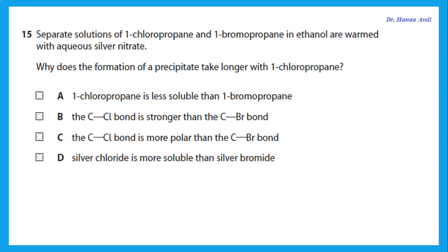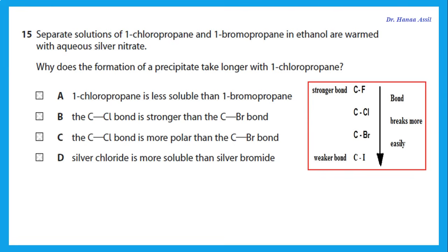Separate solutions of 1-chloropropane and 1-bromopropane in ethanol are warmed with aqueous silver nitrate. Why does formation of a precipitate take longer with 1-chloropropane? Adding silver nitrate produces a precipitate of silver chloride or silver bromide, but first we must break the C-halogen bond. Going down Group 7, the bond between carbon and the halogen becomes weaker and more easily broken. So the bromo compound reacts faster because the C-Cl bond is stronger than the C-Br bond.